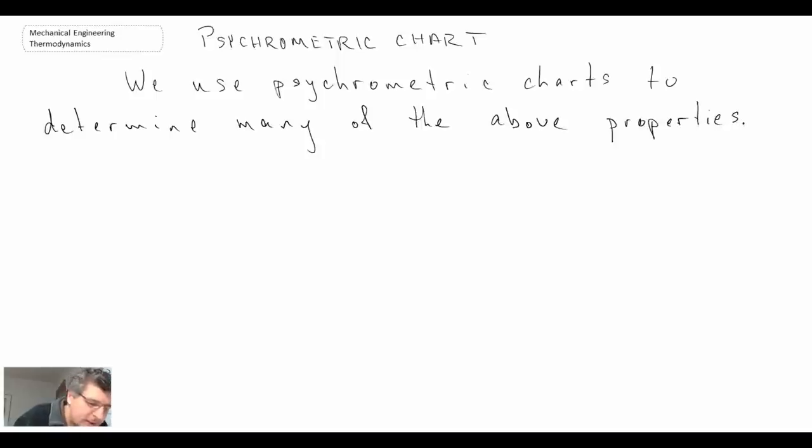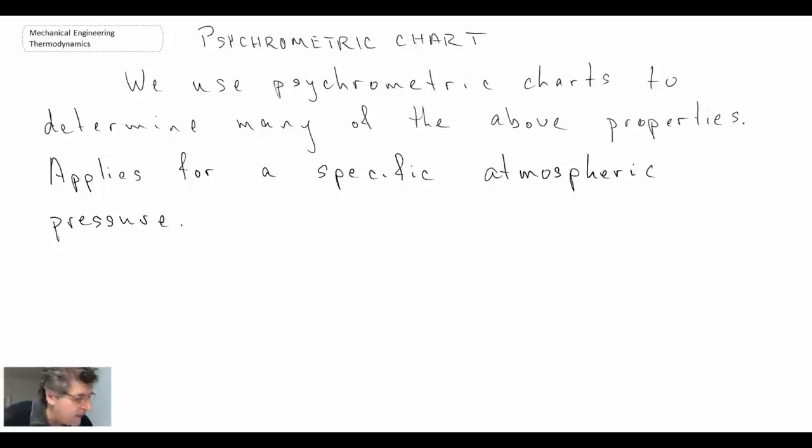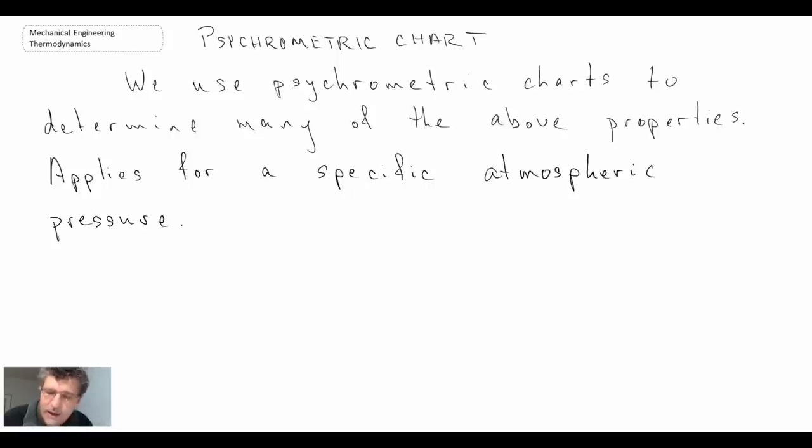Now one thing I should make a note of is this psychrometric chart only applies for specific pressures, so that's an atmospheric pressure. Typically the ones you'll find in a textbook will be for one atmosphere, but if you live at a higher elevation for example, then you would need to have one that is specific for your particular elevation.